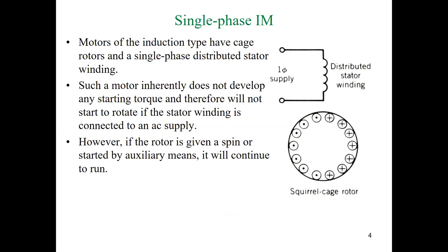Simply, the single-phase induction motor has cage rotors like the squirrel cage three-phase one, and a single-phase distributed stator winding. Such a motor normally doesn't develop any starting torque. When you connect this motor to the supply, the machine will not start moving — it will oscillate and needs something to start it. If you move the rotor by hand in one direction, the machine will start in that direction and rotate. However, without any external help, the machine will not start.